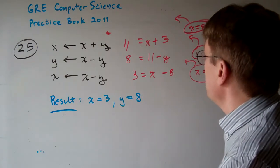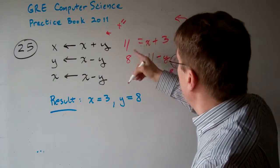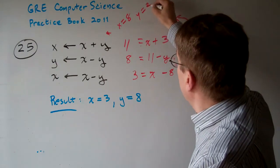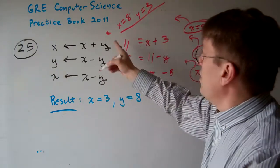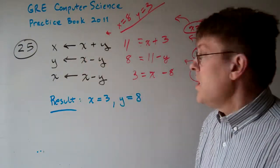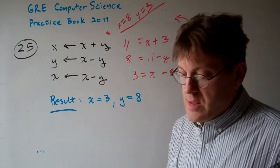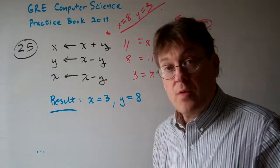So the preconditions are going to have to be x equals 8 and y equals 3. If x equals 8 and y equals 3, then we will get this result. So the answer then is b, x equals 8 and y equals 3.